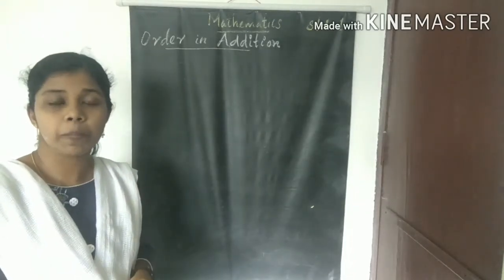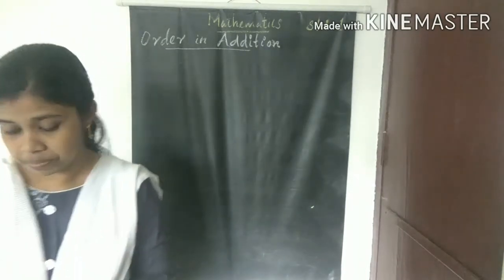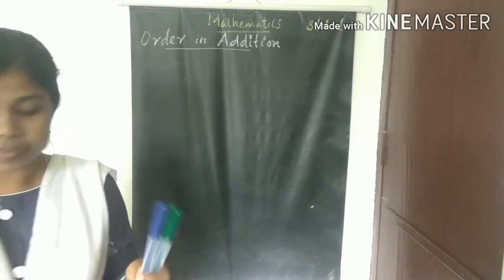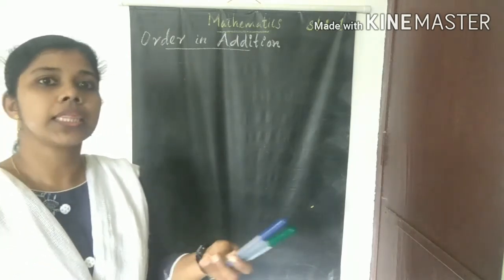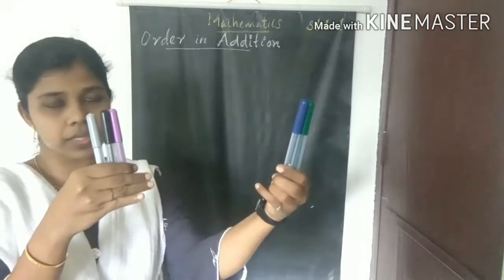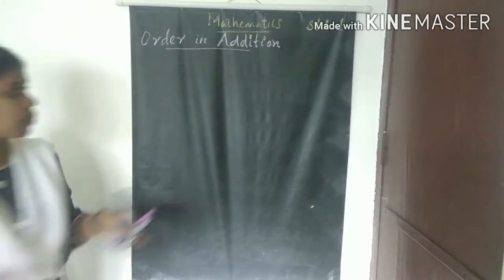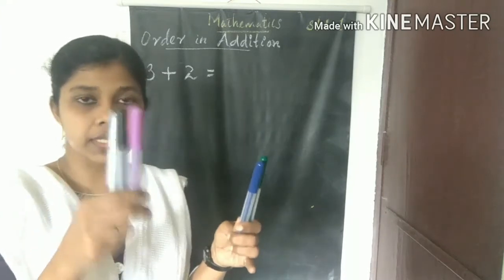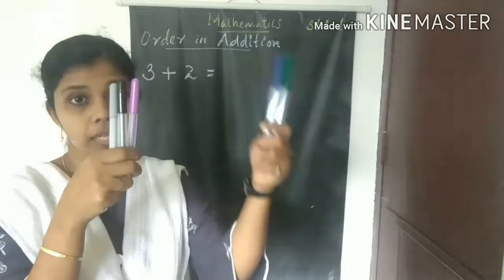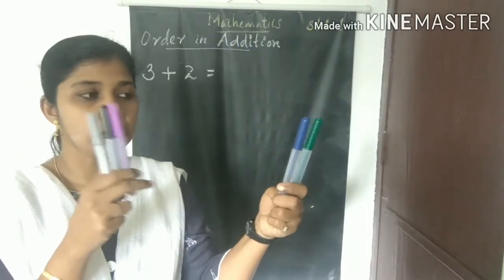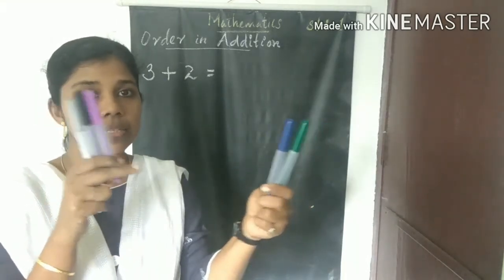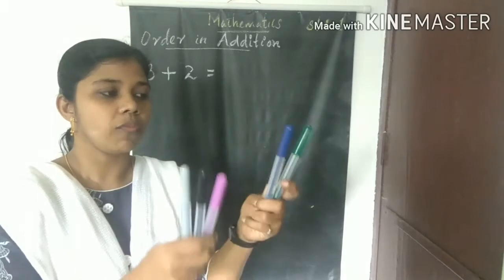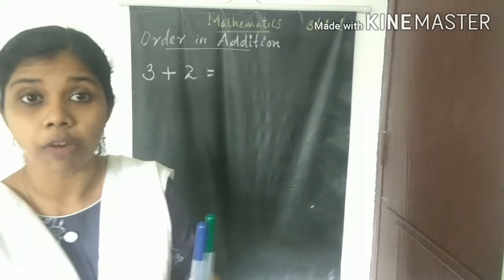For example, in my left hand I have two pence and in my right hand I have three pence — that is three plus two. First, three pence are in my right hand, then I take two pence in my left hand. What is the total number of pence? These two sets of pence are taken together.